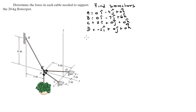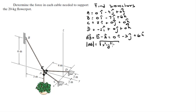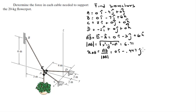The unit vector from A to B can be found first by computing the vector A to B, which is simply B minus A, giving (0)i + (-3)j + (6)k. Then find its magnitude: the square root of (0² + 3² + 6²), which equals 6.71. The unit vector A,B is found by dividing the vector A,B by its magnitude, giving each component divided by 6.71.